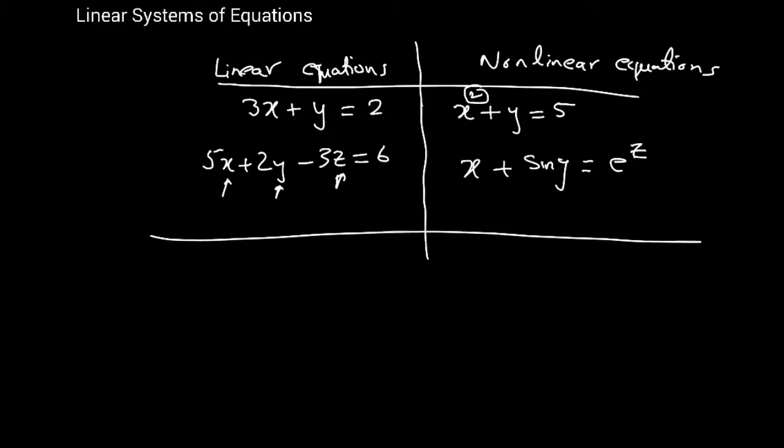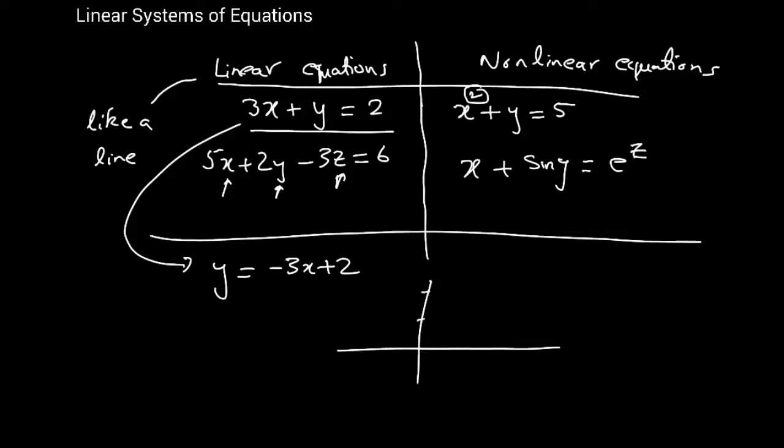The word linear means like a line. It comes from the word line. If you look at the first equation, I can rewrite that as y equals minus 3x plus 2. That goes through the point 2, its intercept is 2 here. Basically, this line here is approximately looking like this. It's a straight line with slope negative 3 and y intercept 2.